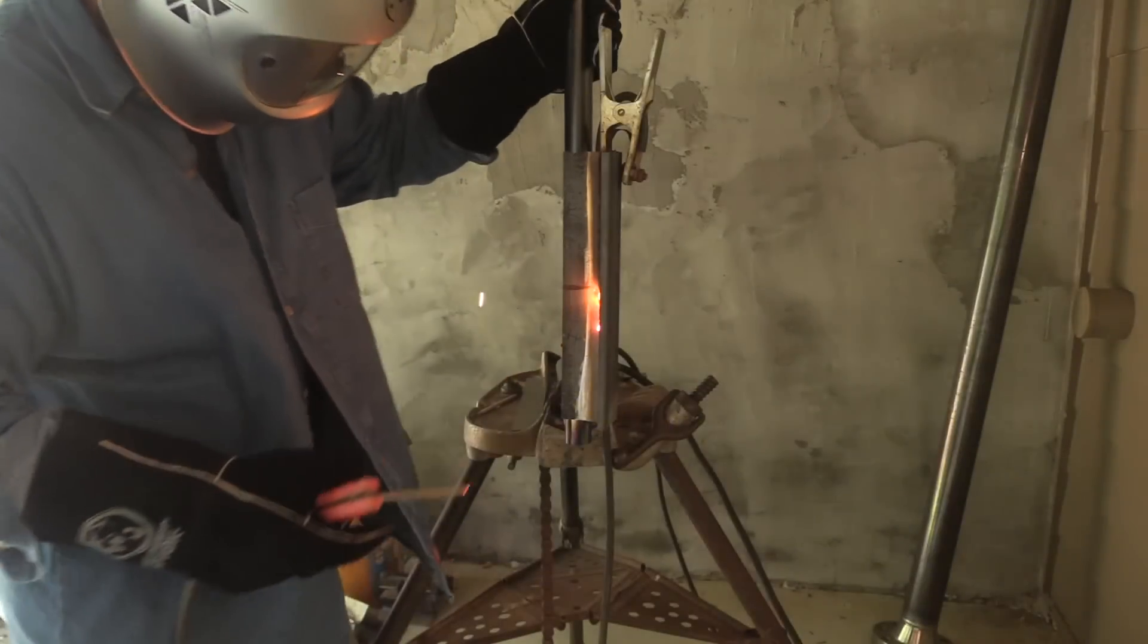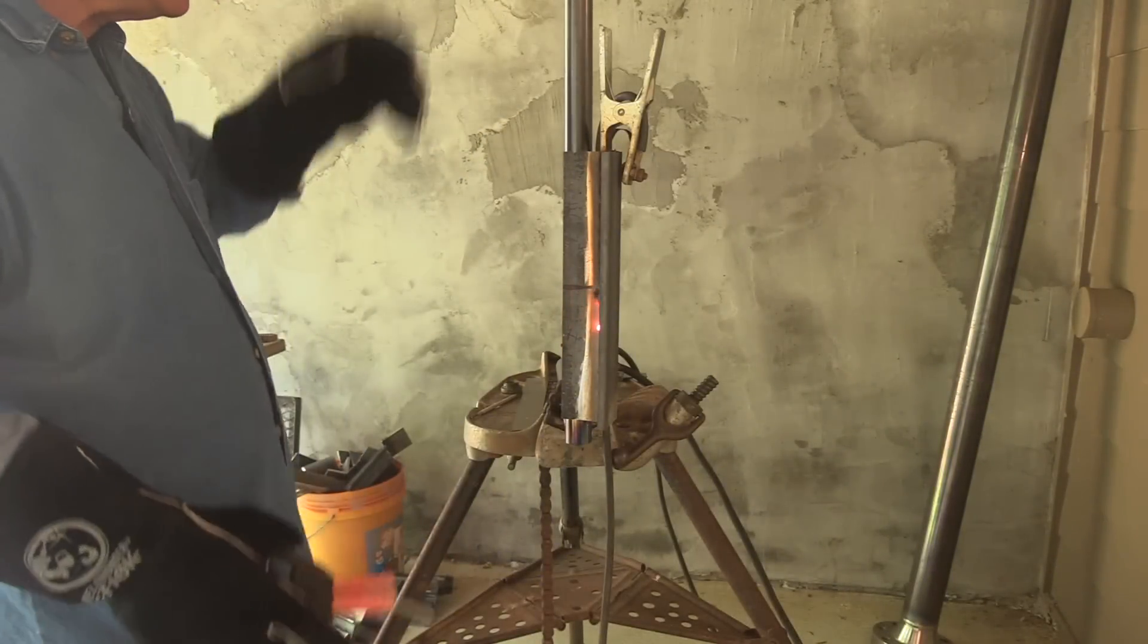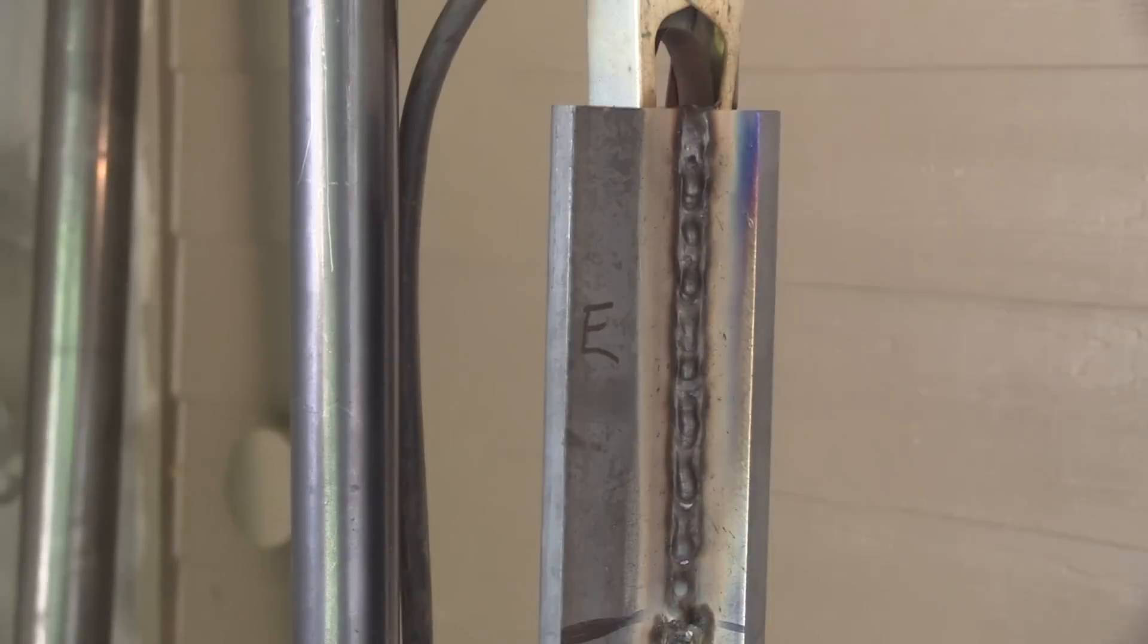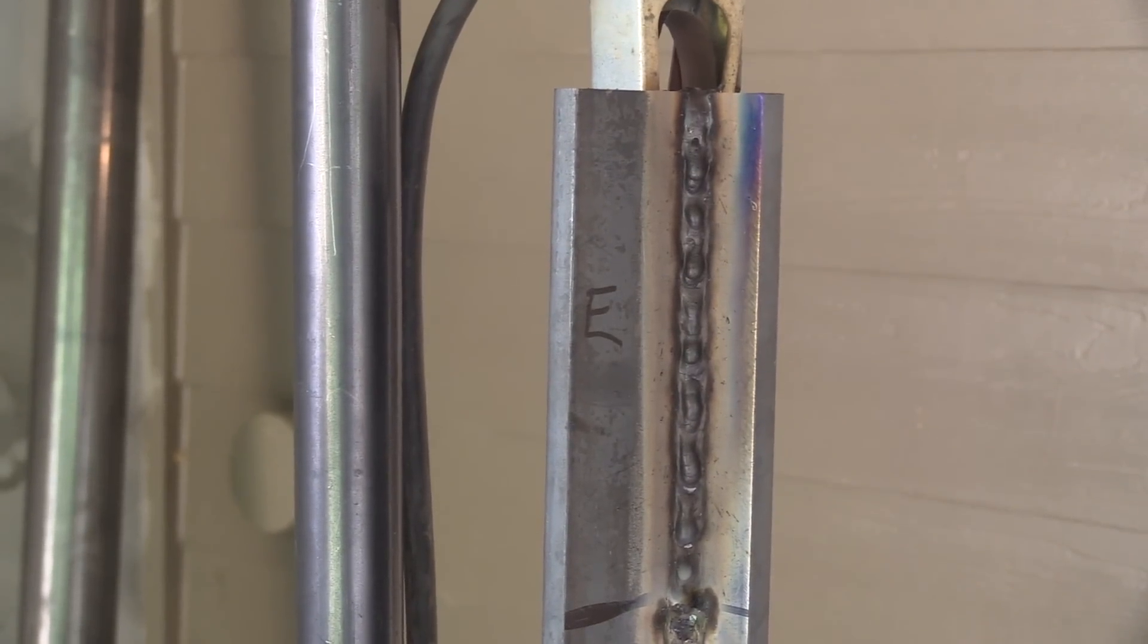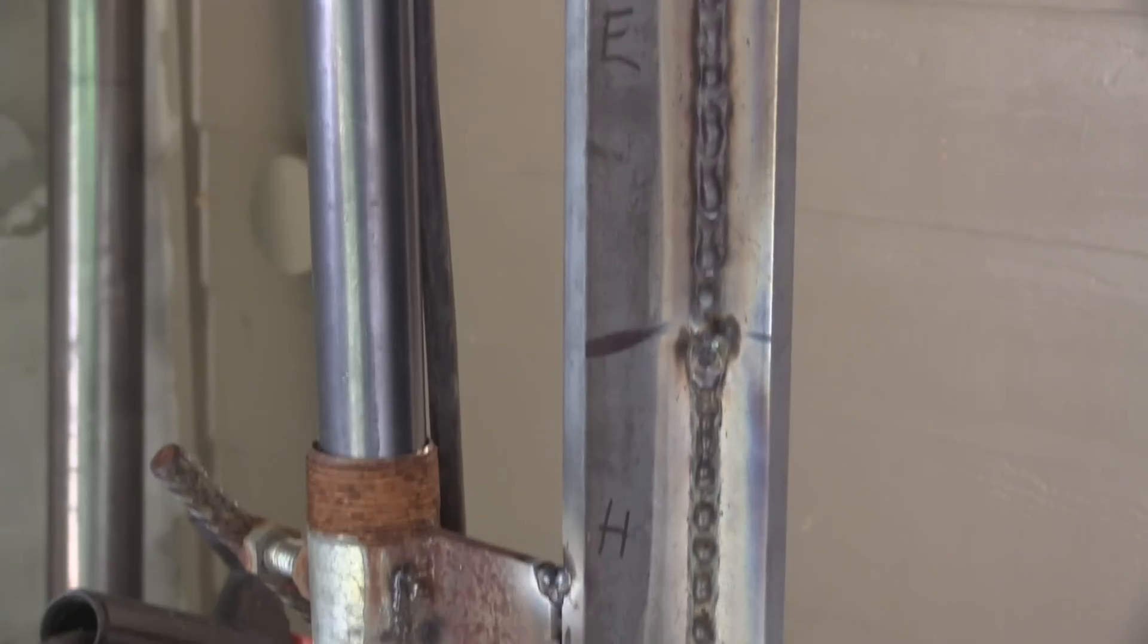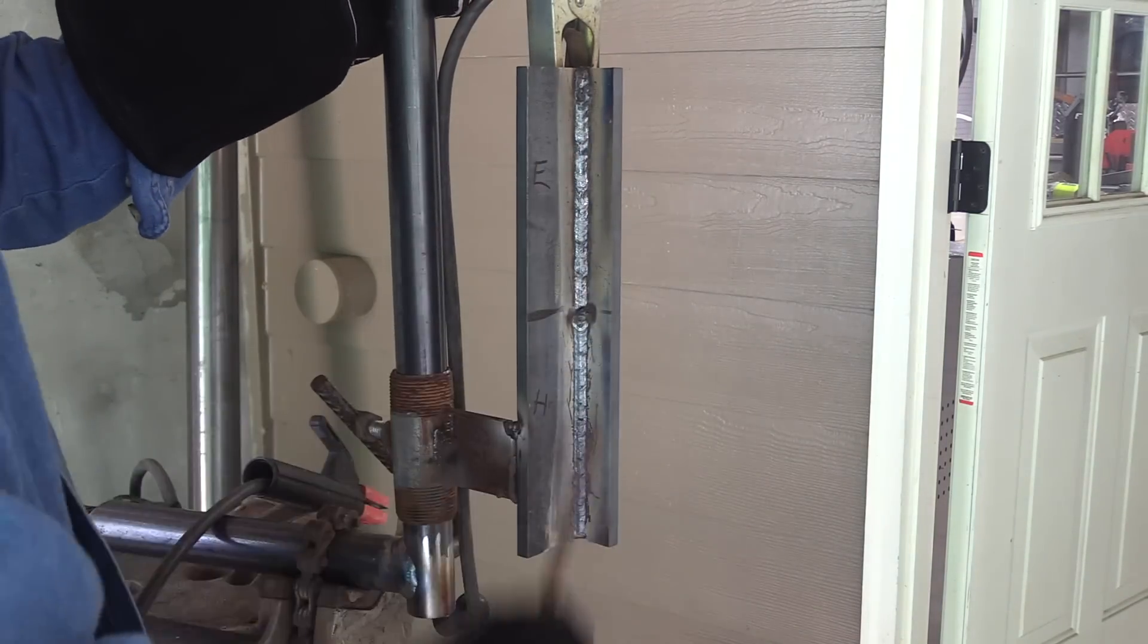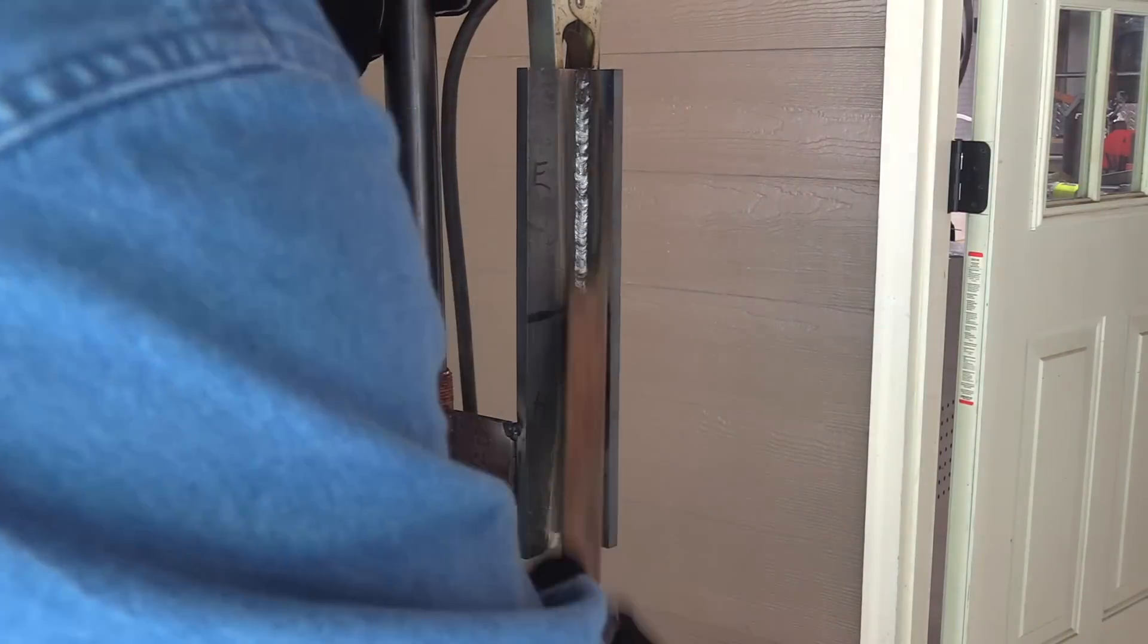In fact, there are some welding procedures that basically state little or no electrode manipulation allowed. So when stringer beads are required, sometimes there's a limit on the width. Sometimes there's not. Sometimes there's no requirement for stringers or weave, but I'm doing stringers today because sometimes stringers are required.